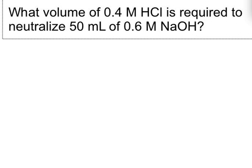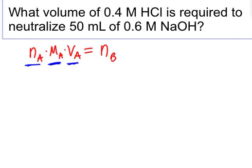Here we have a titration. The best way to approach a titration is with the equation that says at the end of the titration, your acid amount has to equal your base amount. The moles of acid are given by Na times Ma times Va, where Na is the number of H-plus protons the acid can donate, Ma is the concentration of the acid, and Va is the volume of the acid. This equals Nb times Mb times Vb for the base.